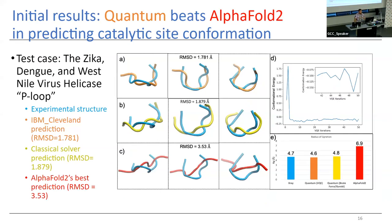Looking at initial results, we gave it the catalytic site of the Zika virus helicase protein — a very vital protein that unwinds double-stranded RNA into single strands, allowing the infection to go forward. The quantum computer gave us a more accurate prediction than both AlphaFold and classical solvers, including brute force and the heuristic solver Gurobi. It was accurate by almost a factor of two. Importantly, this program has never seen this sequence before — it is not machine learning; it is simulating the sheer physics of why proteins interact the way they do.